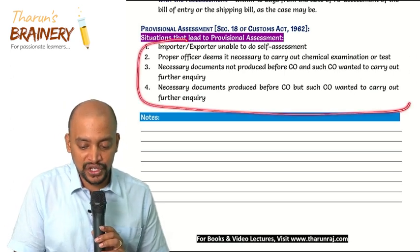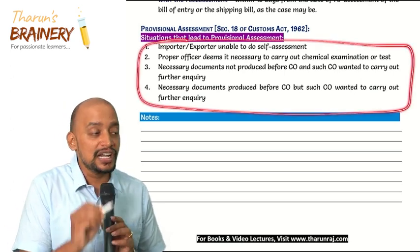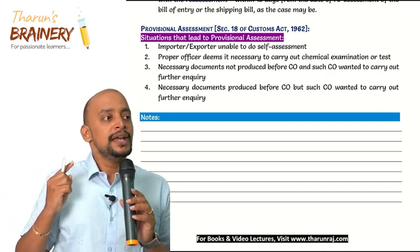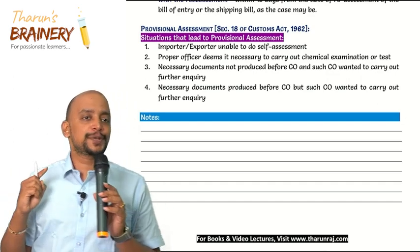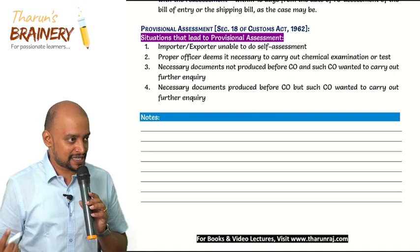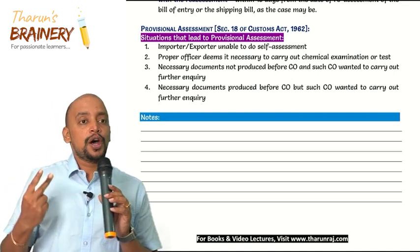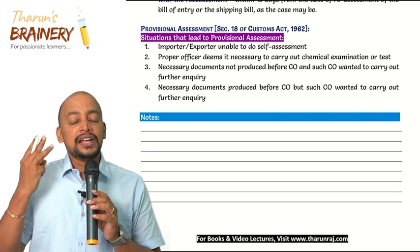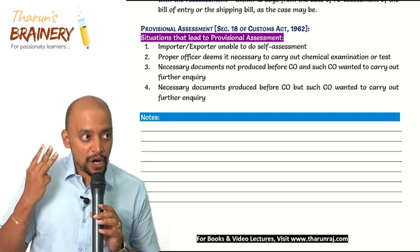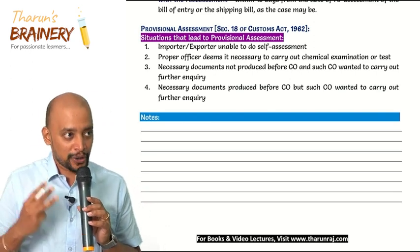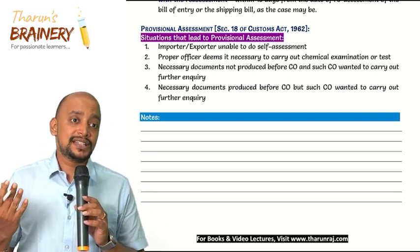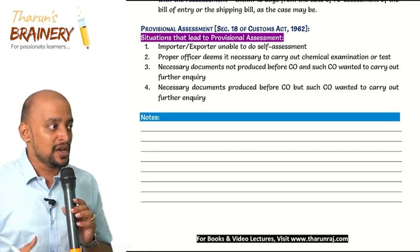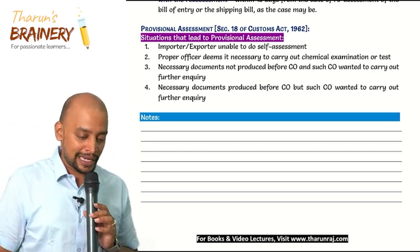These are the four situations that lead to provisional assessment: (1) importer or exporter is unable to do the self-assessment; (2) proper officer wants to carry out chemical examination or test; (3) necessary documents not produced before the customs officer; (4) necessary documents submitted but still the proper officer wants to carry out further enquiry.